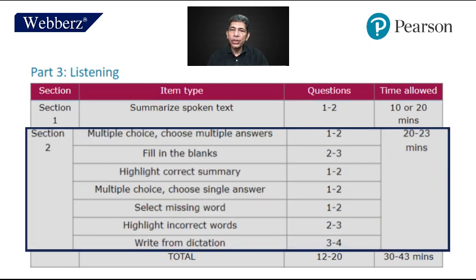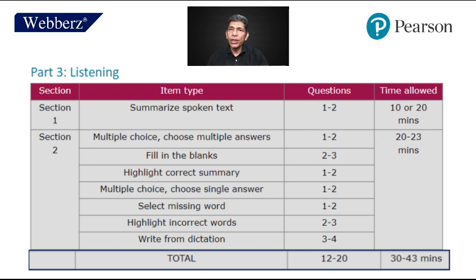In section 2, there are 7 question types. Multiple choice, choose multiple answers — 1 to 2. Fill in the blanks — 2 to 3. Highlight correct summary — 1 to 2. Multiple choice, choose single answer — 1 to 2. Select missing word — 1 to 2. Highlight incorrect words — 2 to 3. Write from dictation — 3 to 4. The total number of questions will be 12 to 20, and total timing will be 30 to 43 minutes.